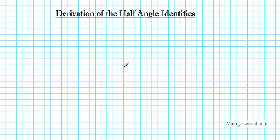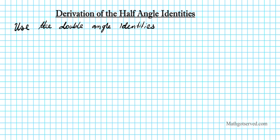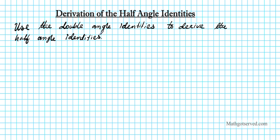Good day students. In this clip we are going to be going over the derivation of the half angle identities. Let's go ahead and write down the instruction for the notes: use the double angle identities to derive the half angle identities. In this proof we are assuming that the double angle identities are true. I have clips going over how to derive the double angle identities and showing that the sum and difference identities are in fact true — you can view those on notvrc.com. So let's go ahead and do this proof.